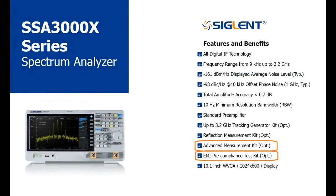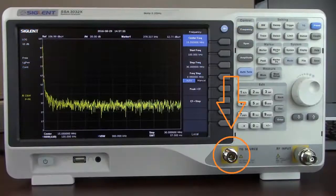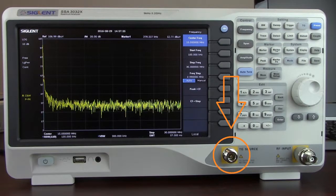The final option I'd like to cover today is the tracking generator. A tracking generator is a swept RF source that follows the analyzer frequency steps. It's typically used to test filters, amplifiers, and cables. The tracking generator hardware from Siglent is included with all versions of the SSA 3000X family.